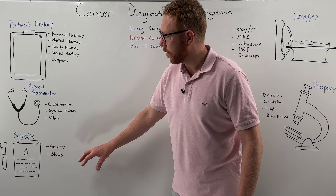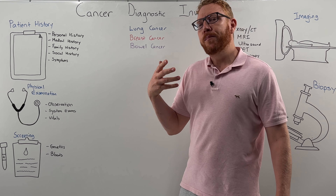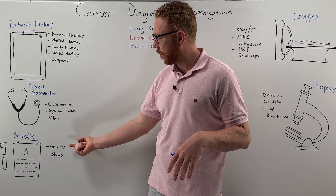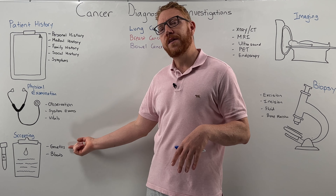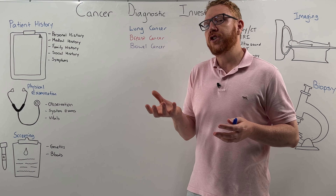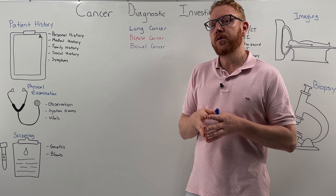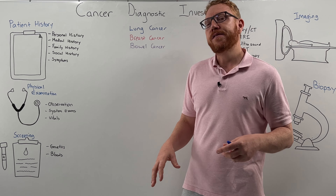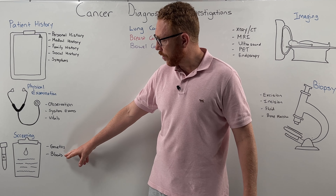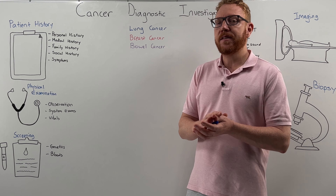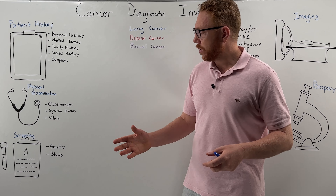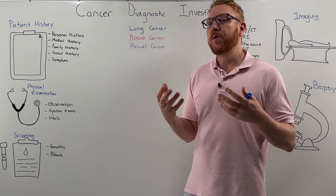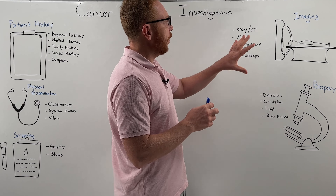Then we have screening approaches, put in place for high-risk individuals. For example, genetic profiling can identify genes that predispose an individual to cancer — a good example being the BRCA gene for breast cancer. Certain blood tests can screen for cancers like leukemias, and we also have tests like the bowel test used in Australia, which looks for blood within the stool.